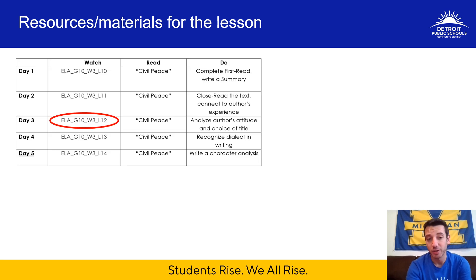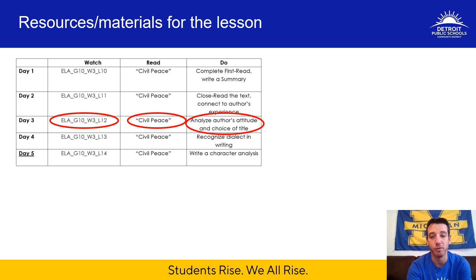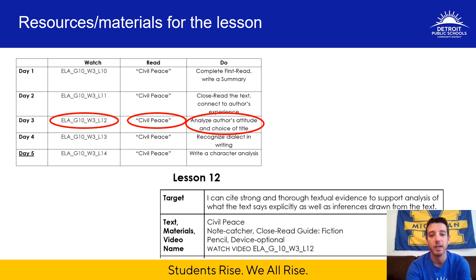So today, after you watch this video — Week 3, Lesson 12 — you're going to go back to Civil Peace. You've already done a first read and a close read, but now you're going to do more analysis. You're going to analyze the author's attitude and choice of title. And when you go down to Lesson 12, as always, you can remind yourself of the materials you need for today's lesson.